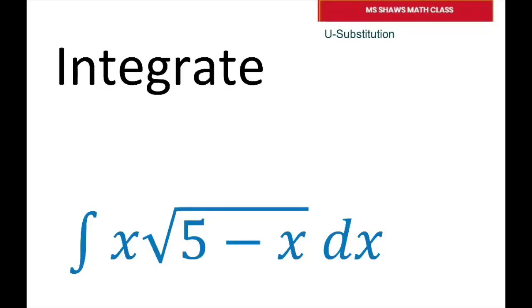Hi everyone, we're going to integrate x times the square root of 5 minus x dx with u-substitution. The first thing I'm going to do is let u equal 5 minus x, so this is your u.